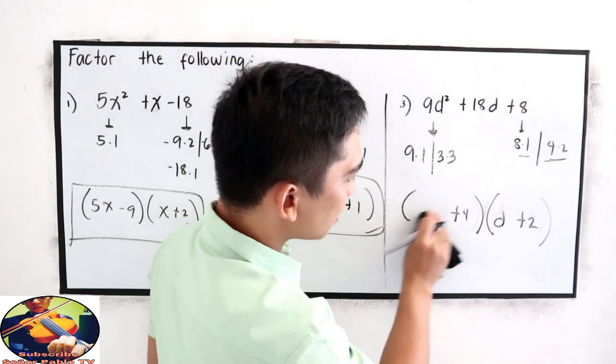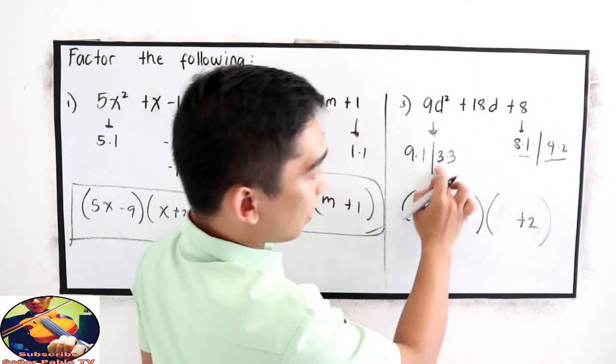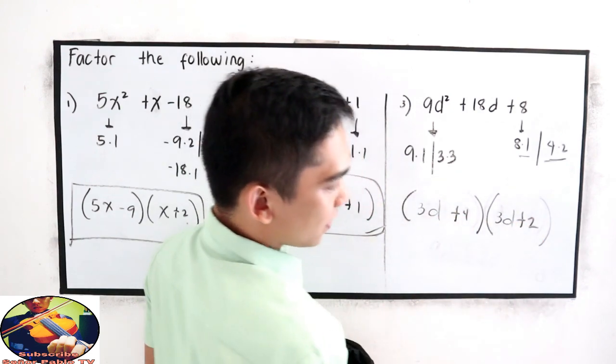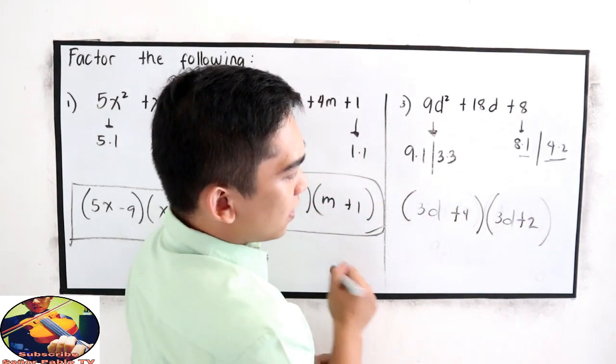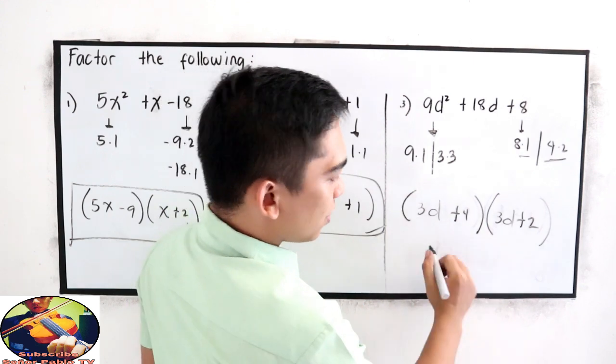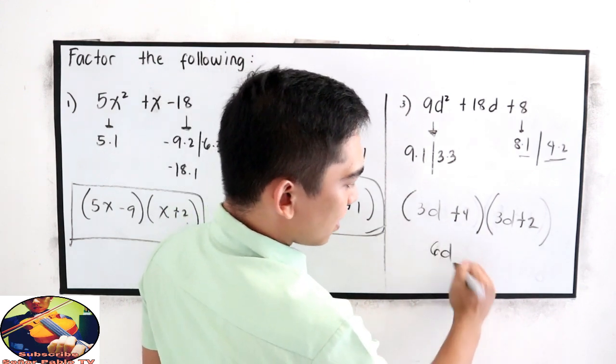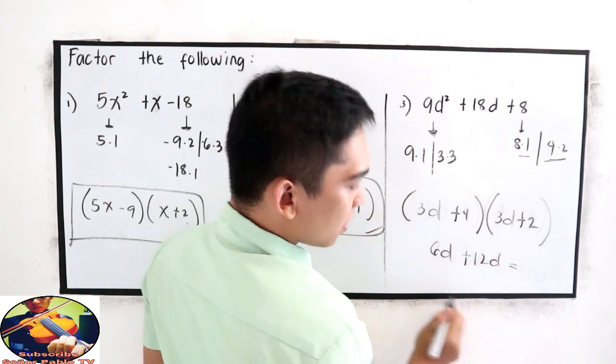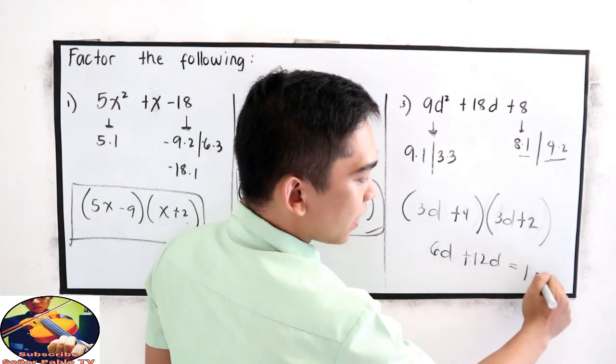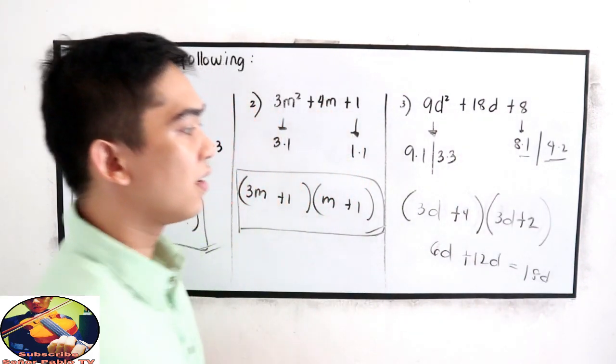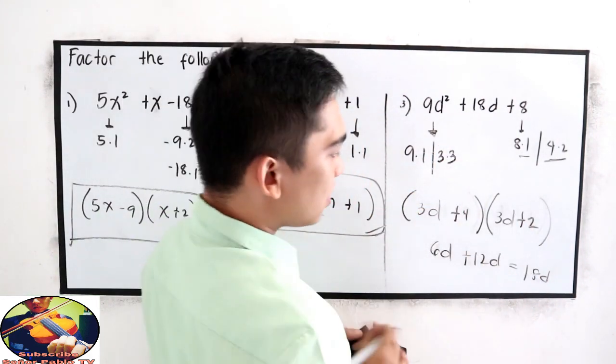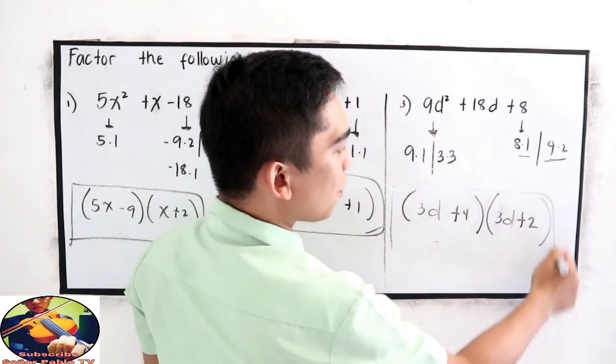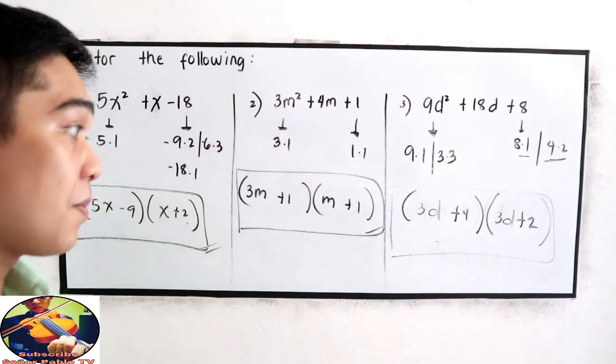Another factors. Let's try 3 and 3. 3d then 3d. 3d times 2, we have 6d, 4 times 3d, plus 12d. 6 plus 12, 18d. Are they the same? Are equal now. So, this is our factor, 3d plus 4 and 3d plus 2.